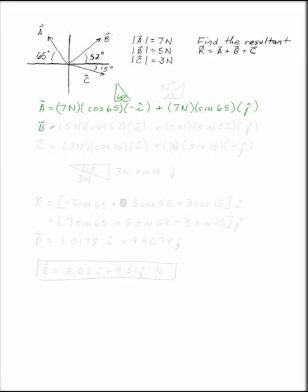Vector B is the same sort of situation except it's from the positive x-axis, so your i is positive. This is 52 degrees, so B is 5 newtons times cosine 52 in the positive i direction, plus 5 newtons times sine 52 in the positive j direction.